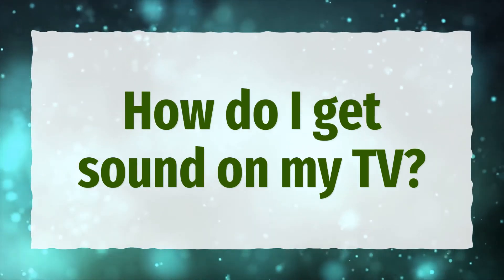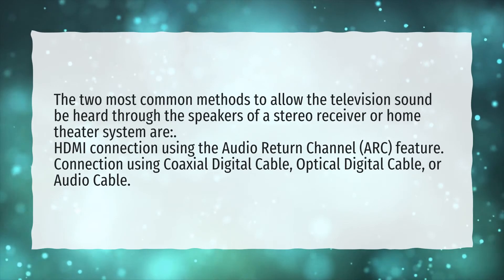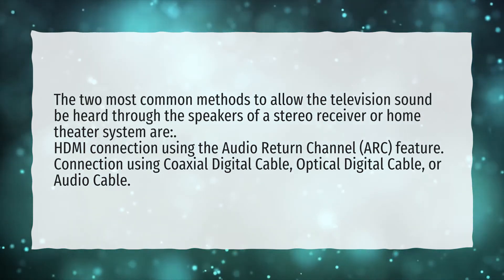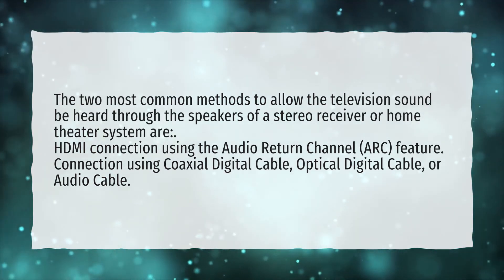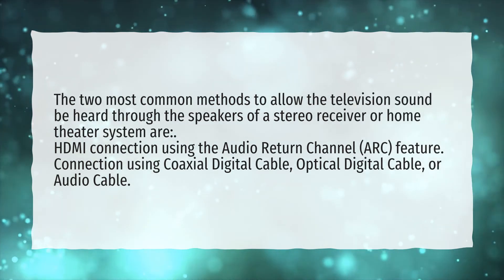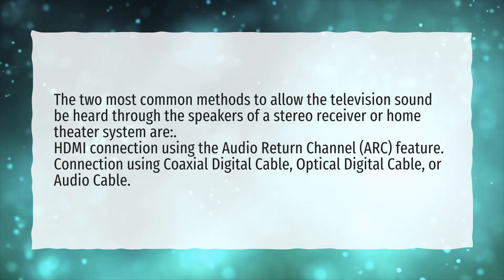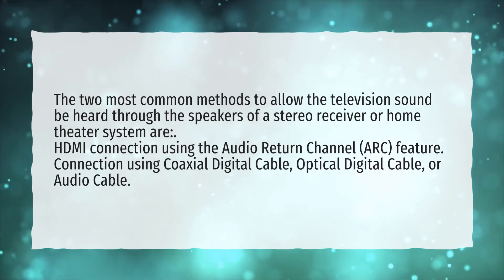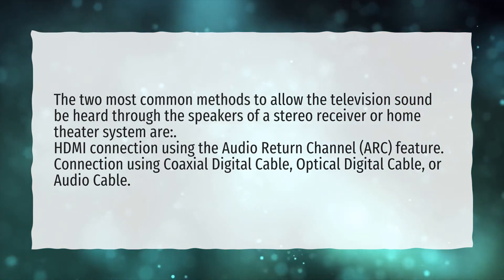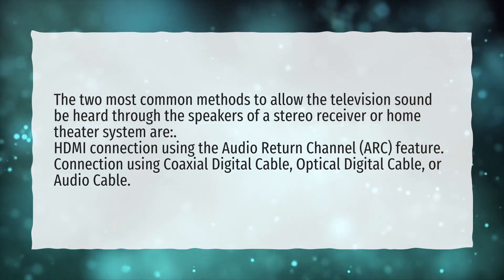How do I get sound on my TV? The two most common methods to allow the television sound to be heard through the speakers of a stereo receiver or home theater system are: HDMI connection using the Audio Return Channel (ARC) feature, and connection using coaxial digital cable, optical digital cable, or audio cable.